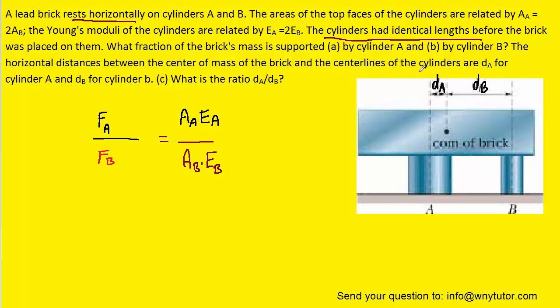For the area of cylinder A, we were told that area is equal to twice the area of cylinder B, so we can make that substitution. The Young's modulus of cylinder A was equal to twice the Young's modulus of cylinder B. We can eliminate the terms AB and EB since they both appear in the numerator and denominator.